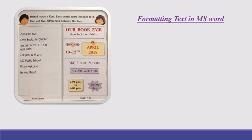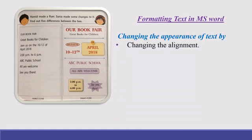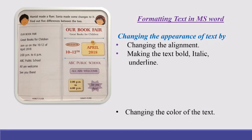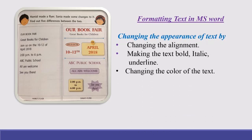If you look at the picture, on the left hand side the text looks normal, whereas on the right hand side the text looks more interesting. Such change of appearance of a text is done by changing the alignment, by making the text bold, italic, underlined, and by changing the color of the text. Such change in appearance of a text is called formatting.